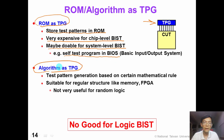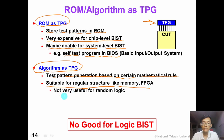A second idea is to use an algorithmic test pattern generator as TPG. The algorithmic test pattern generator can generate test patterns based on certain mathematical rules or algorithms. This is suitable for testing regular structures such as memory or FPGA. However, this might not be very useful for random logic, so both of these solutions are not good enough for logic BIST.